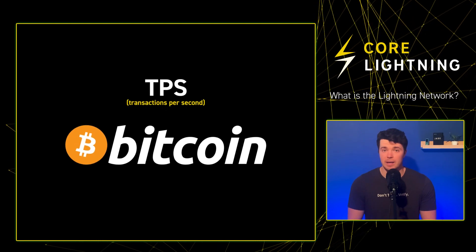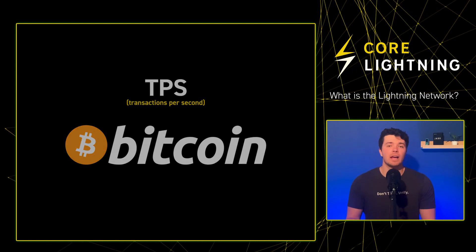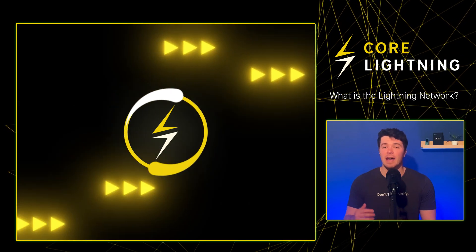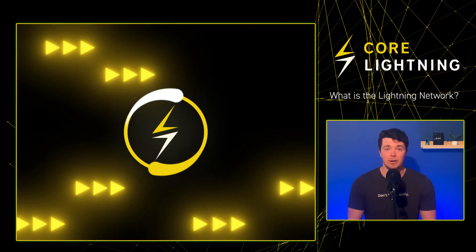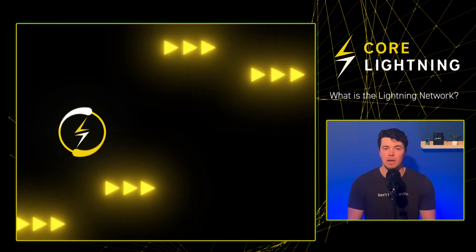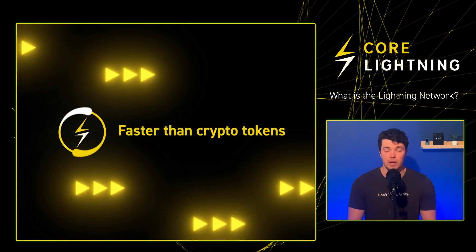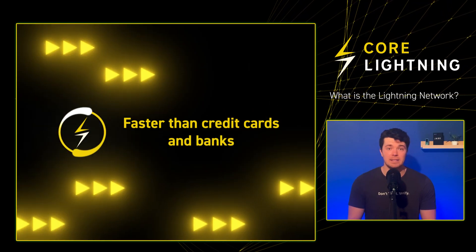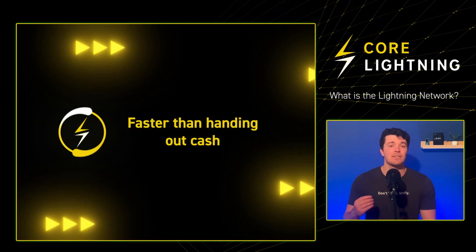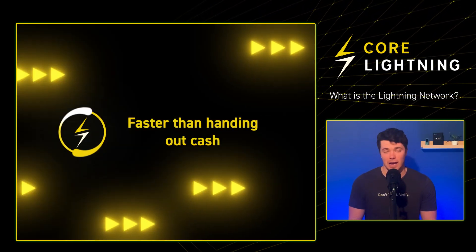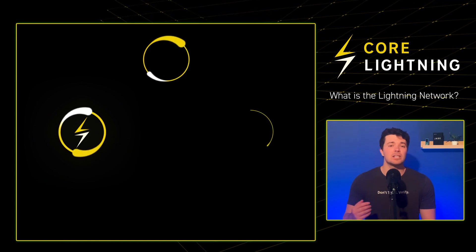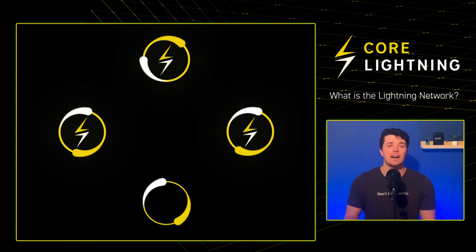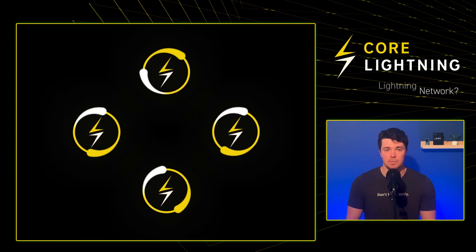While it's true Bitcoin has a low TPS, with the Lightning Network its TPS becomes the fastest of any payment competitor globally. This includes your favorite crypto tokens, your credit cards, your banks, and even at times it takes to physically hand over cash to a friend. When connected to the right peers, the Lightning Network provides near-instant Bitcoin settlements.